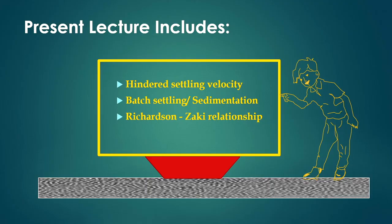This lecture covers hindered settling velocity and batch settling or sedimentation: how the relative velocity of particles falling downward is affected by interactions among solid particles, and how that relative velocity relates to particle concentration in the suspension or slurry. The relationship between relative velocity, terminal velocity, and particle concentration is called the Richardson-Zaki relationship.